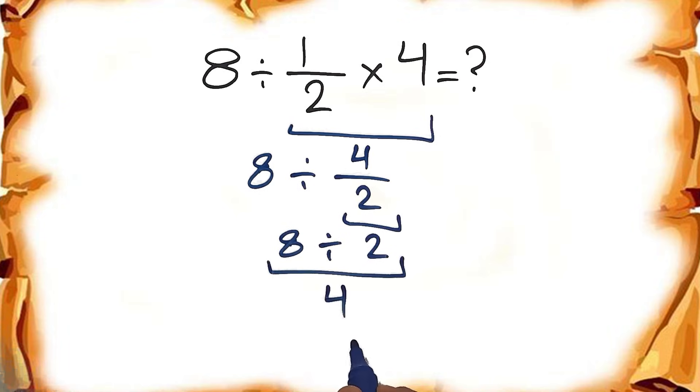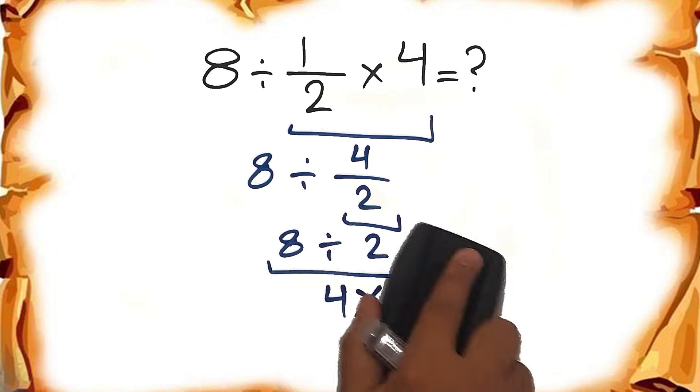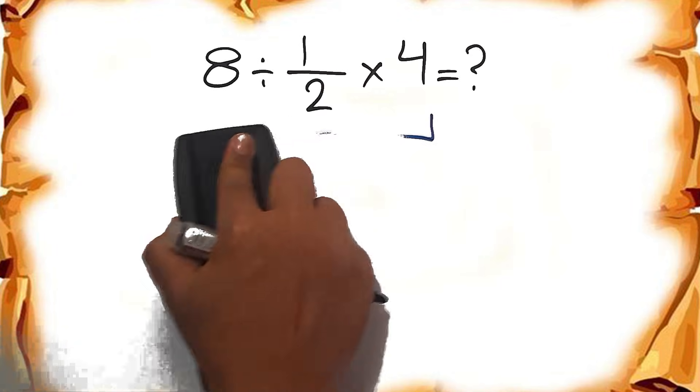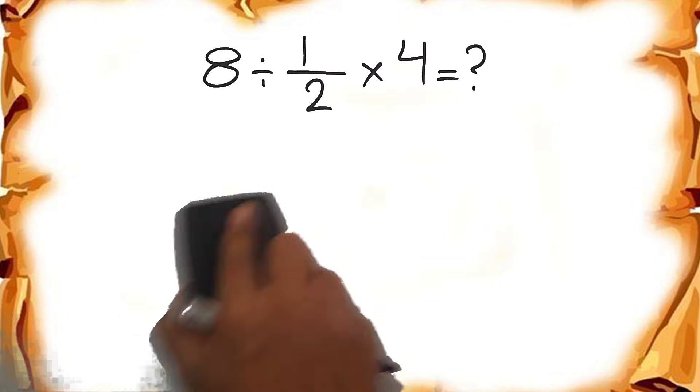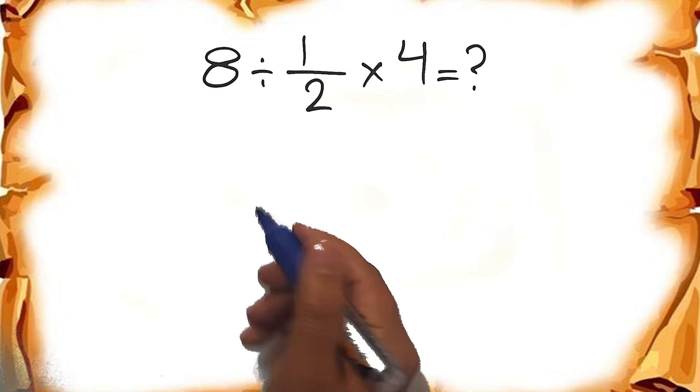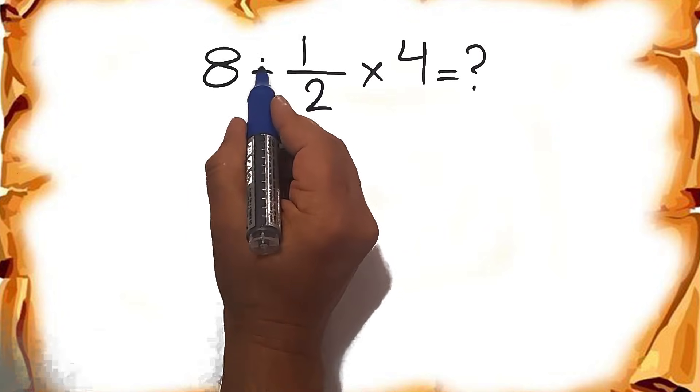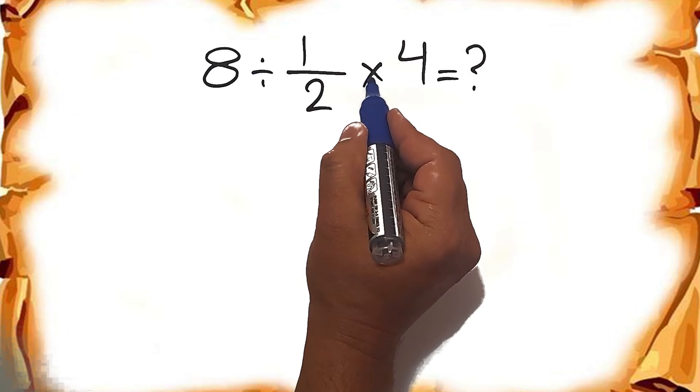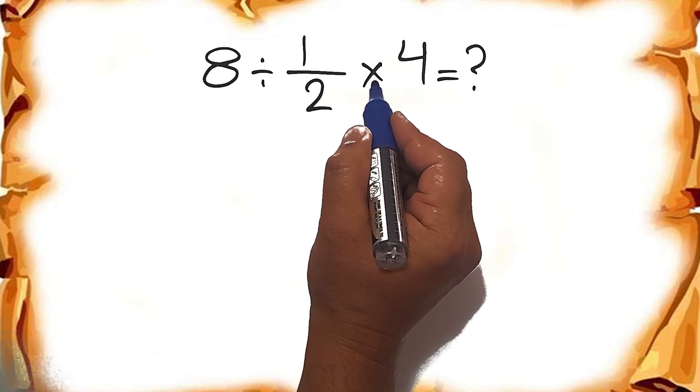But this answer is not correct. Because according to the order of operations, division and multiplication have equal priority and we have to work from left to right.